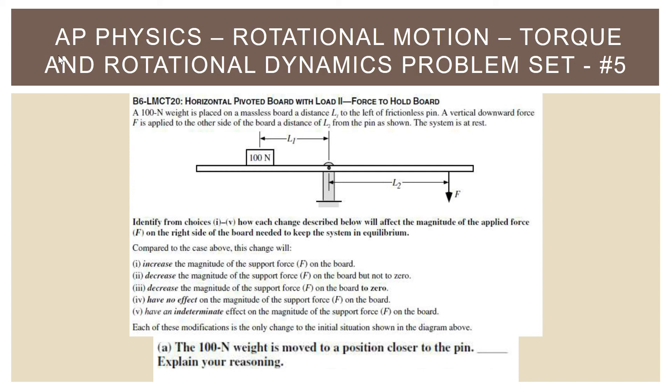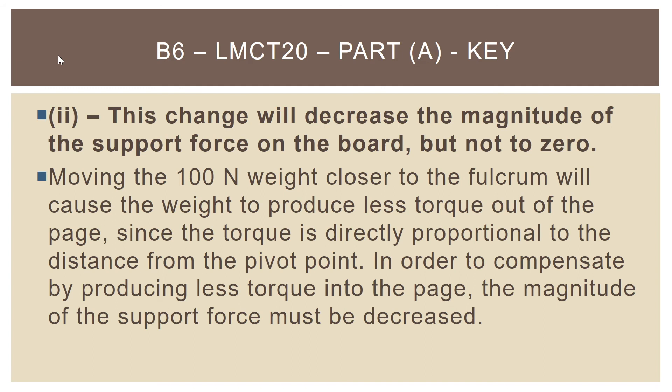The answer is two: moving the 100-Newton weight closer to the pin would decrease the magnitude of the support force on the board, but not to zero. Moving the weight closer to the fulcrum causes it to produce less torque out of the page — that torque is out of the page because it would cause a counterclockwise rotation. Since the torque is directly proportional to the distance from the pivot point, if that distance gets smaller, the torque gets smaller. In order to compensate by producing less torque into the page, the magnitude of the support force must be decreased.